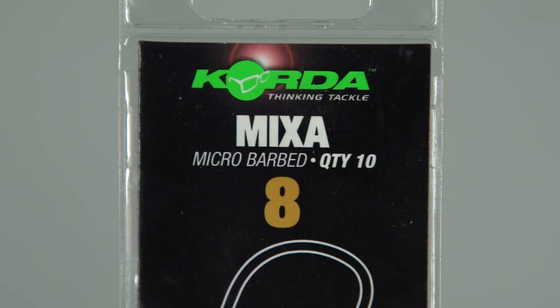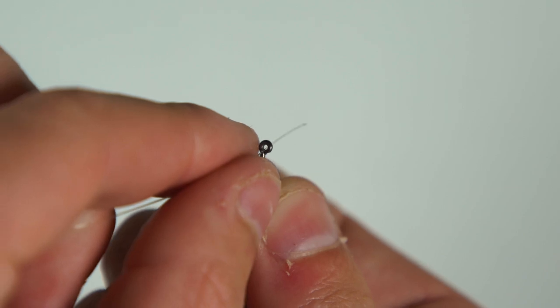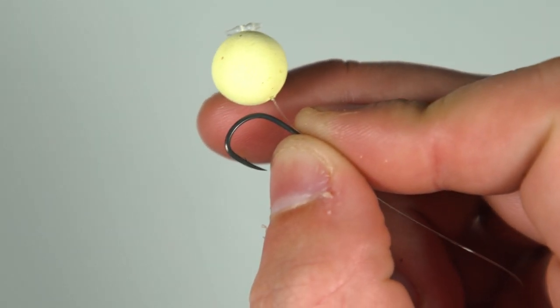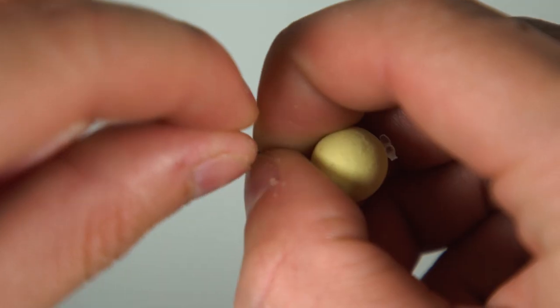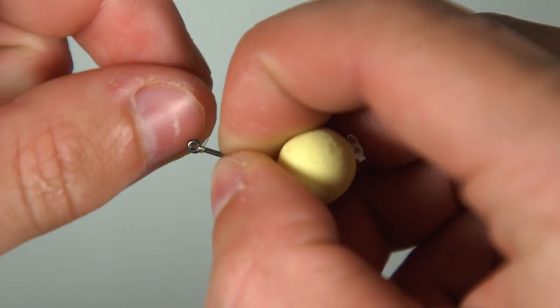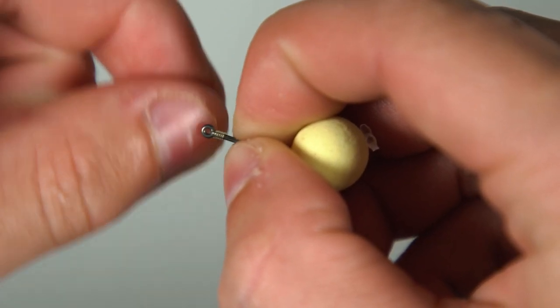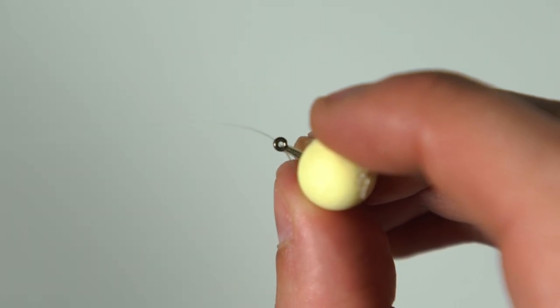Now it's time to attach your hook. Thread the other end of your hook link through the back of the eye of your hook. Pull it up tight to the bait so it sits like this. Now you need to tie a knotless knot, wrapping the line round the shank of the hook 7 or 8 times before pushing the line back through the eye of the hook and pulling it tight.